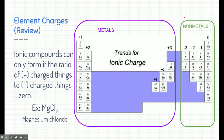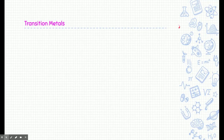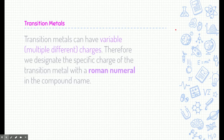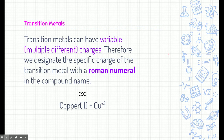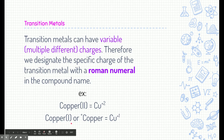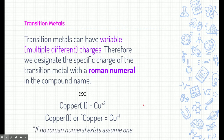On the periodic table, there are elements missing their charge — these are the transition metals, and some other metals also don't have listed charges. Transition metals can have variable charges, so there's no single standard charge we can write on the periodic table. For example, copper can be a plus two charge or a plus one charge. We designate the charge of transition metals using Roman numerals, such as copper II or copper I.